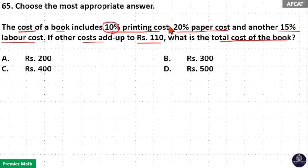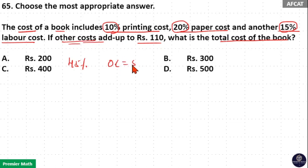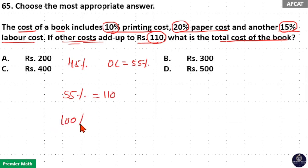10 percentage printing cost plus 20 percentage paper cost plus another 15 percentage labor cost is equal to 45 percentage. Then other cost is 55 percentage. This 55 percentage is equal to 110 rupees. So 55 percentage is 110 rupees means we need to find out 100 percentage — that is the total cost.